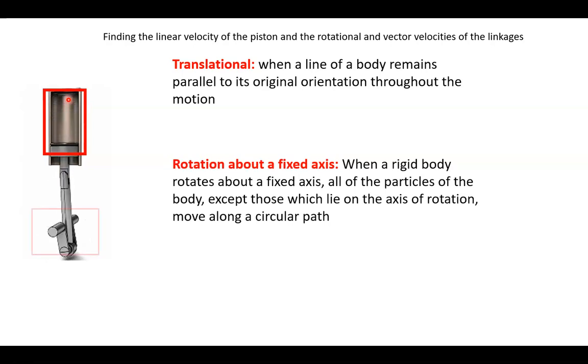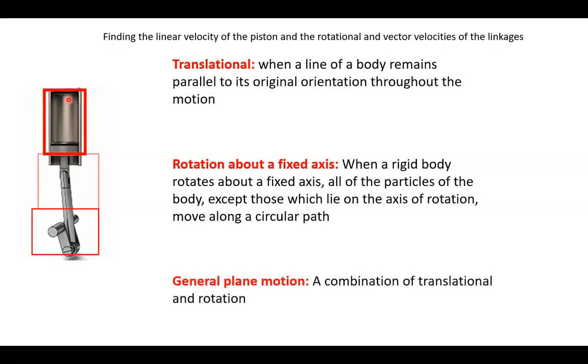The next one, rotational about a fixed axis. So basically you're just going around in a circle. When a rigid body rotates about a fixed axis, all the particles of that body, except those which align on the axis of rotation, move along a circular path. That's very important to keep in mind in our example.